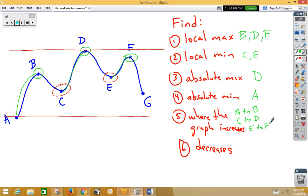The graph decreases from B to C, D to E, and F to G.